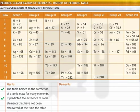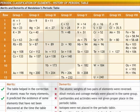However, it did not achieve complete success because of some demerits. The table had some inaccuracies. For example, the table reversed the atomic weights of two pairs of elements.